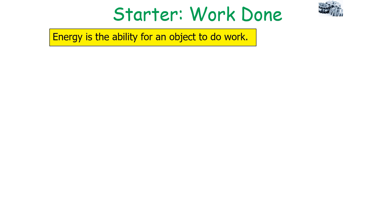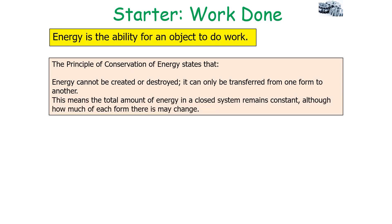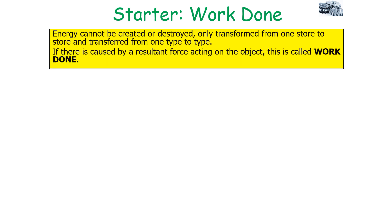Energy is the ability for an object to do work, and the principle of the conservation of energy states that energy cannot be created or destroyed — it can only be transferred from one form to another. The total amount of energy in a closed system remains constant, although how much of each form there is may change. Energy can only be transformed from one store to another, or transferred from one form to another.